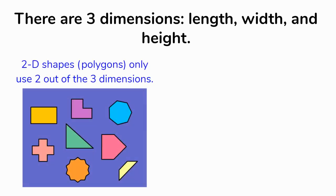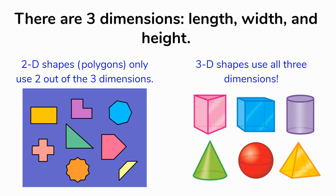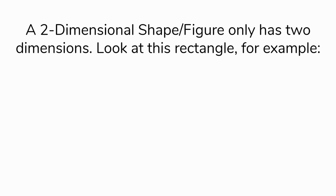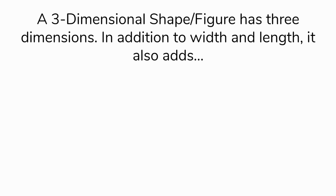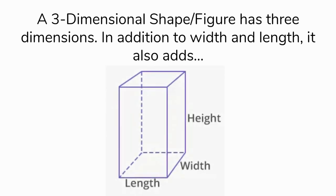2D shapes, like polygons, only use two out of the three dimensions. They use a combination — either length and width, length and height, or width and height — but not all three. 3D shapes, however, use all three dimensions: length, width, and height. Here's an example with a rectangle. This rectangle has length and width, but it doesn't have that third dimension, which is why it looks flat on screen. A three-dimensional shape has length, width, and height — you can see it has the depth, it kind of sticks out at you.